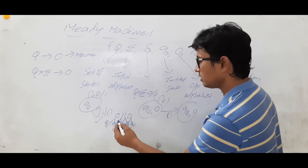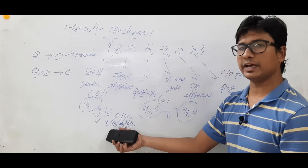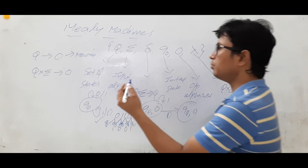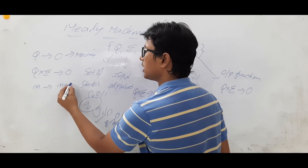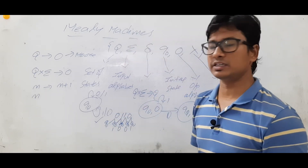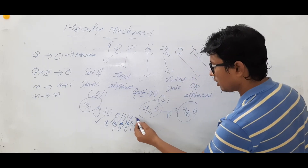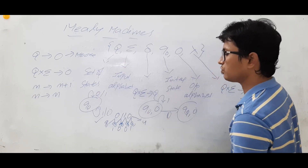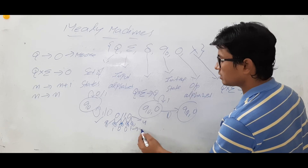So for input 0, 1, 1, 0 I got output 1, 0, 0, 1. Now notice an important difference: in a Moore machine if the input string length is n, the output length is n plus 1. Whereas in a Mealy machine if the input length is n, the output length is also n. Here I gave input of length 4 and I got output of length 4.